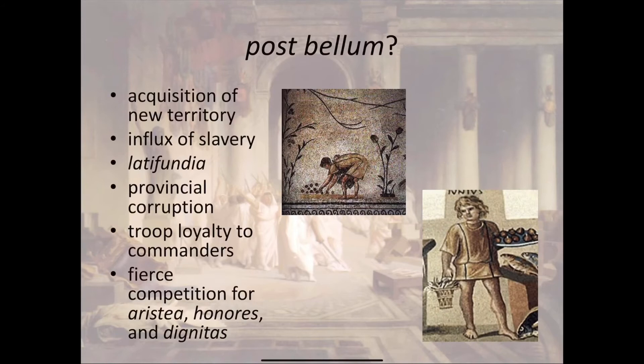We begin with post-bellum, which means after the war — specifically the Punic Wars. Rome fought a series of wars against Carthage to the south: three wars collectively known as the Punic Wars. The Romans got the word 'Punic' from the word 'Poina' — they saw the Carthaginians as Phoenician colonists, and that was the word for Phoenician. So instead of calling them the Carthaginian Wars, they simply called them the Punic Wars.